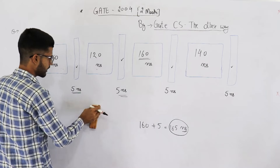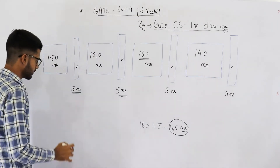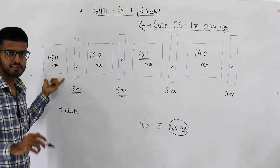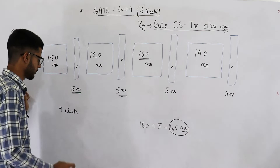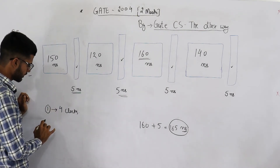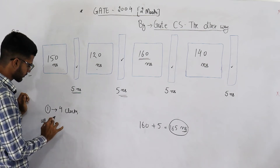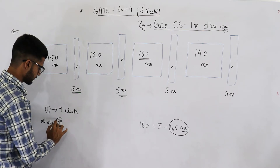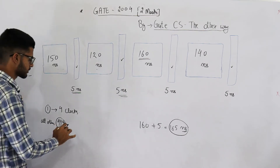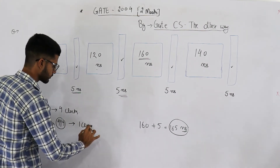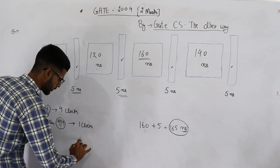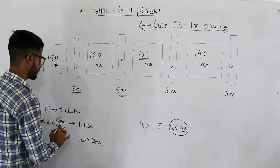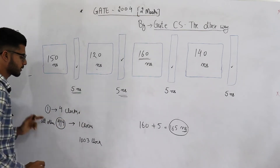The first data item will take four clocks, because when the first instruction is fed into the pipeline, each of the four stages is empty and must be traversed sequentially. All remaining 999 instructions will take one clock each, since the pipeline is filled. So the total number of clocks required is 4 + 999 = 1003 clocks.